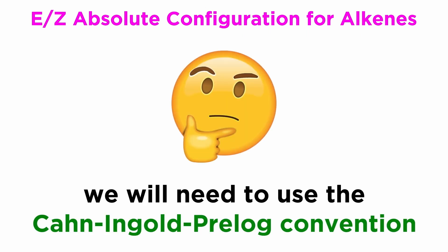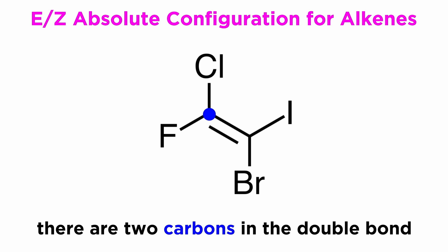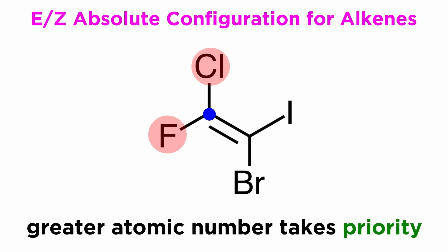That's where E and Z configurations come in. In order to use this terminology, we will have to revisit the Cahn-Ingold-Prelog convention that we learned for assigning R and S to stereocenters. Let's take this example with the halogens. The way we will assign the absolute configuration of this alkene is as follows: take one of the carbons participating in this double bond, consider the two groups that are connected to this carbon, and assign them priorities based on atomic number.